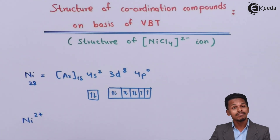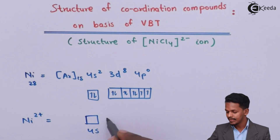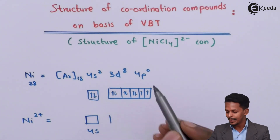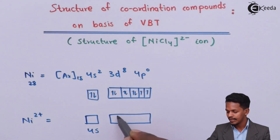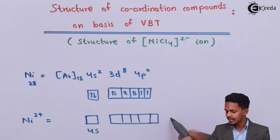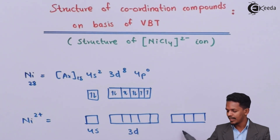For the Ni²⁺ ion, the 4s orbital will be empty because the 2 electrons are removed from the 4s subshell only. The 3d orbital will have 8 electrons filled across 5 d orbitals, and the 4p subshell is already vacant.